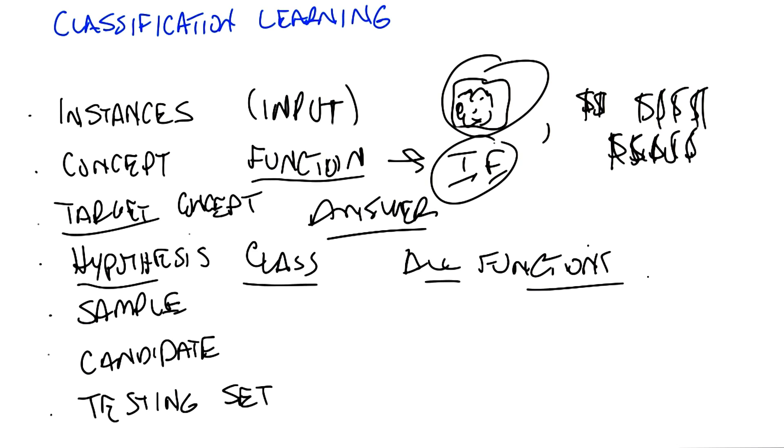Problem with that is that if it's all possible functions, it may be very hard for you to figure out which function is the right one given finite data. So when we actually go over decision trees next, I think it'll be kind of clear why you need to pick a specific hypothesis class to think about.